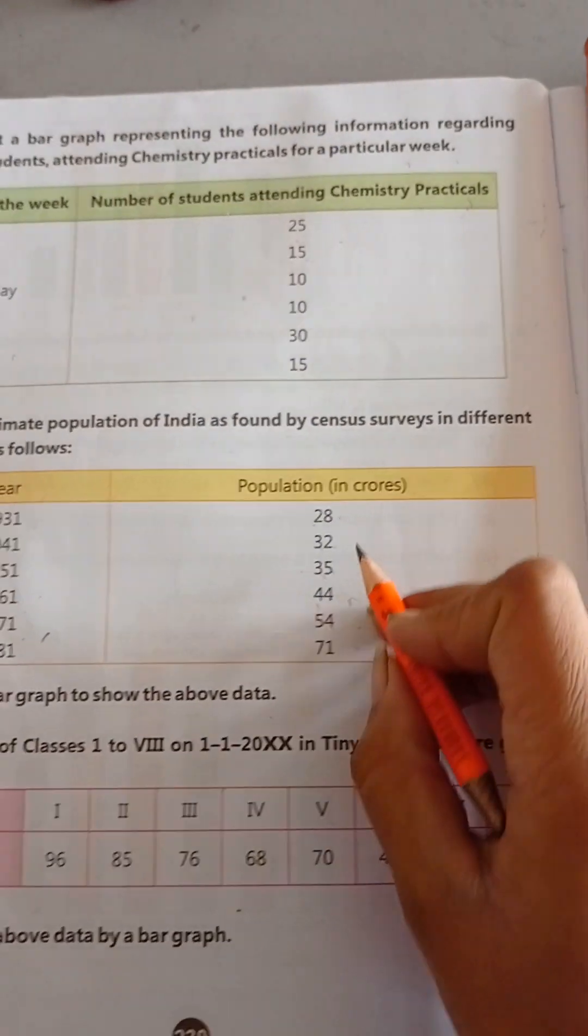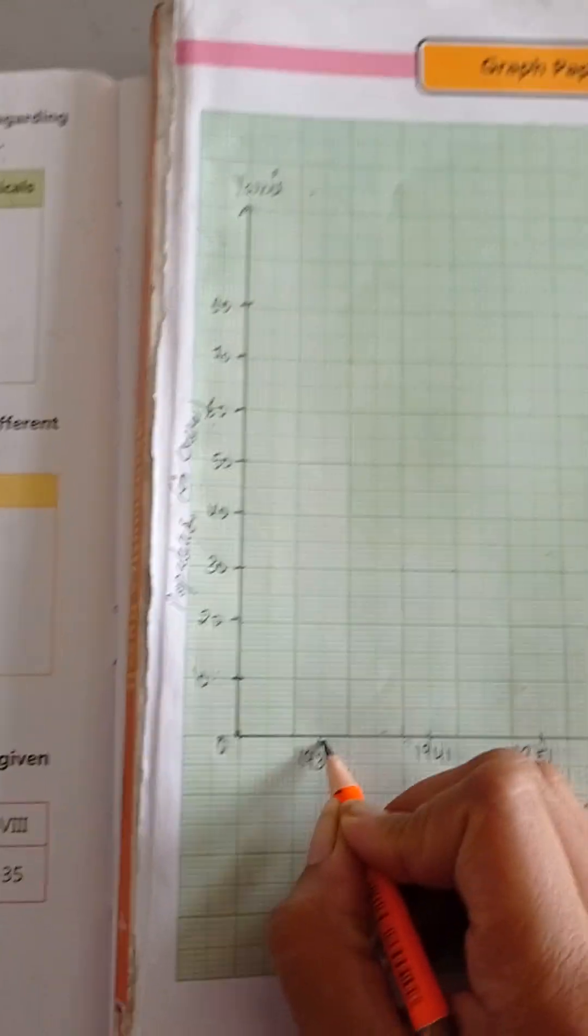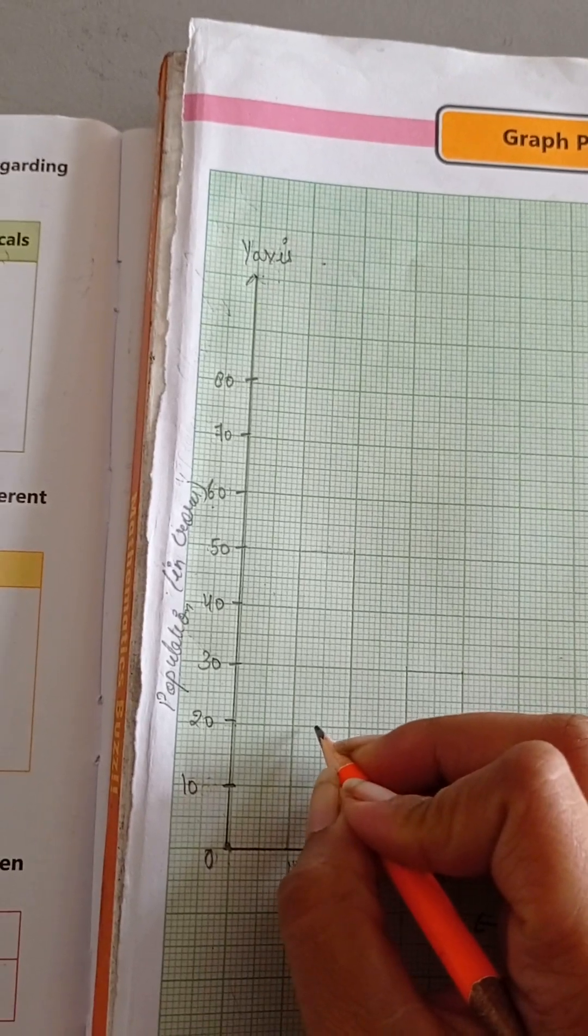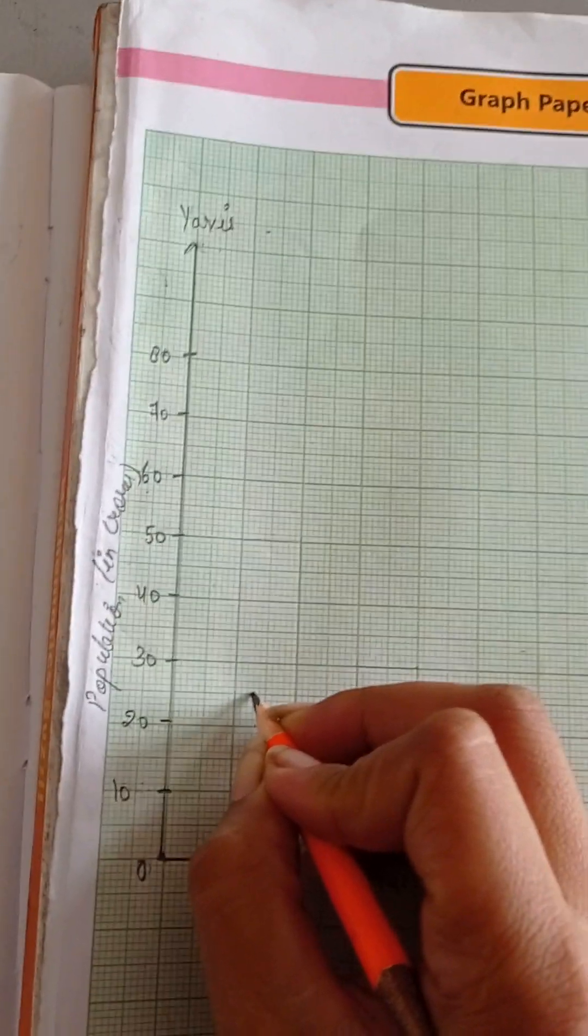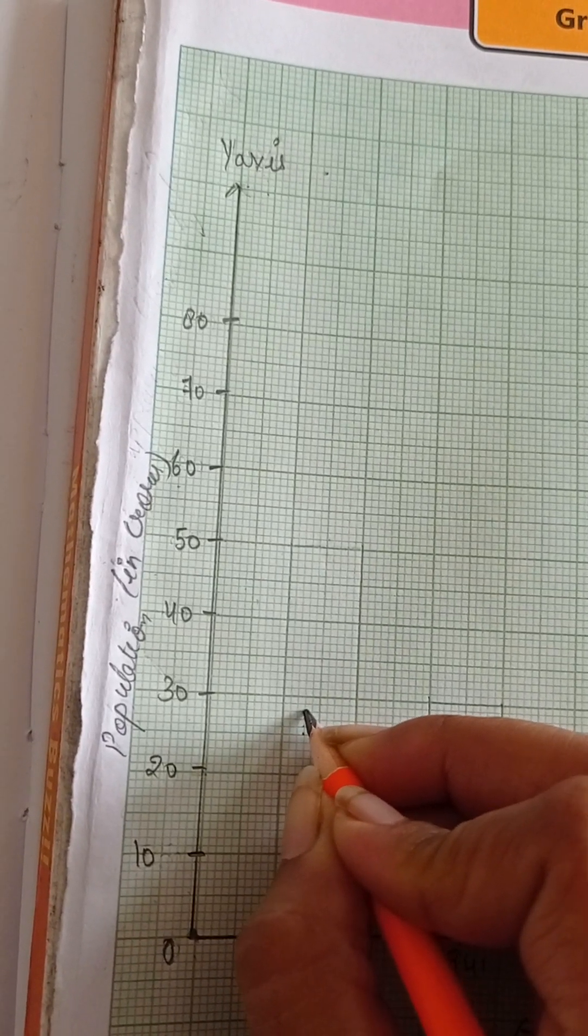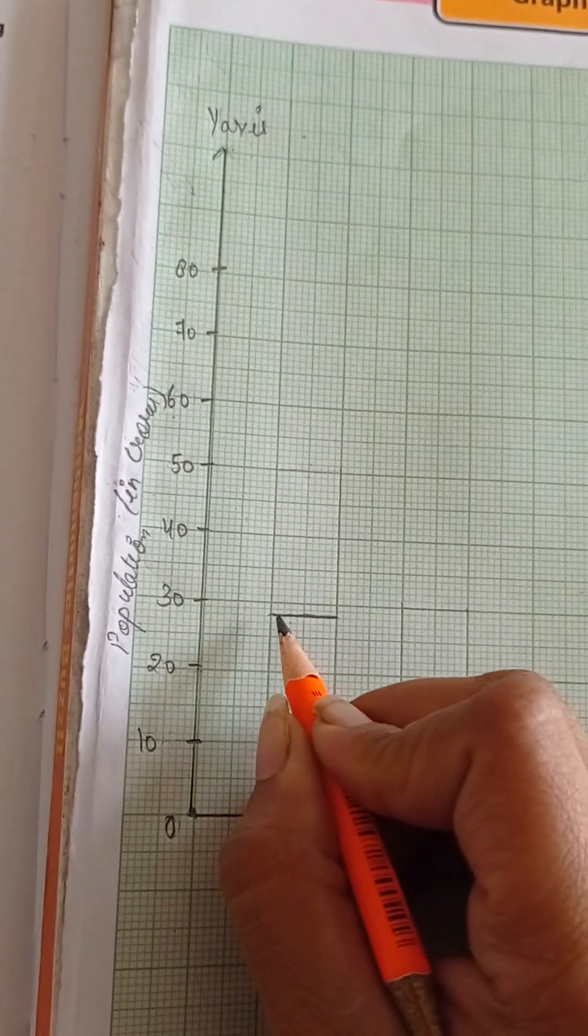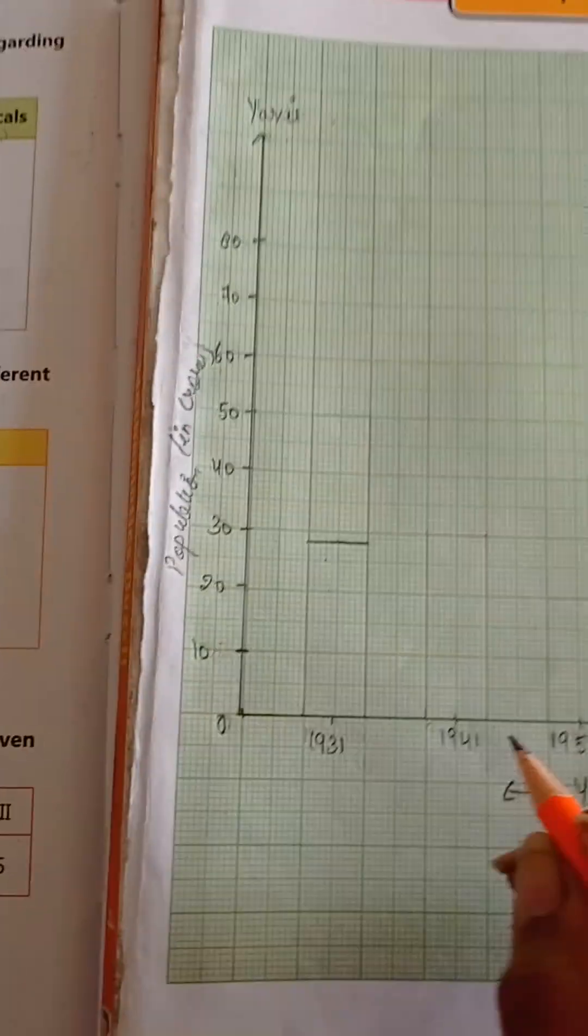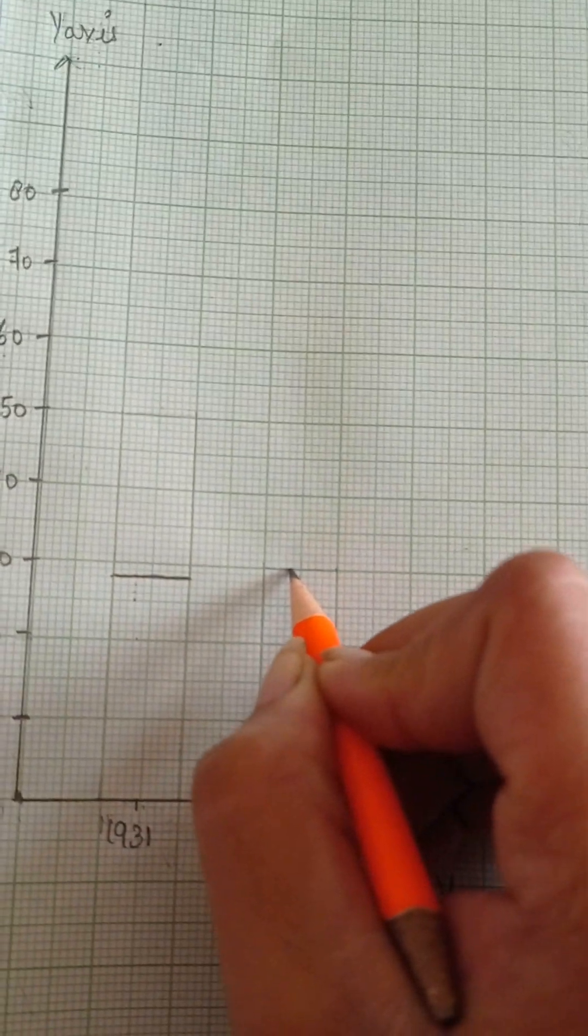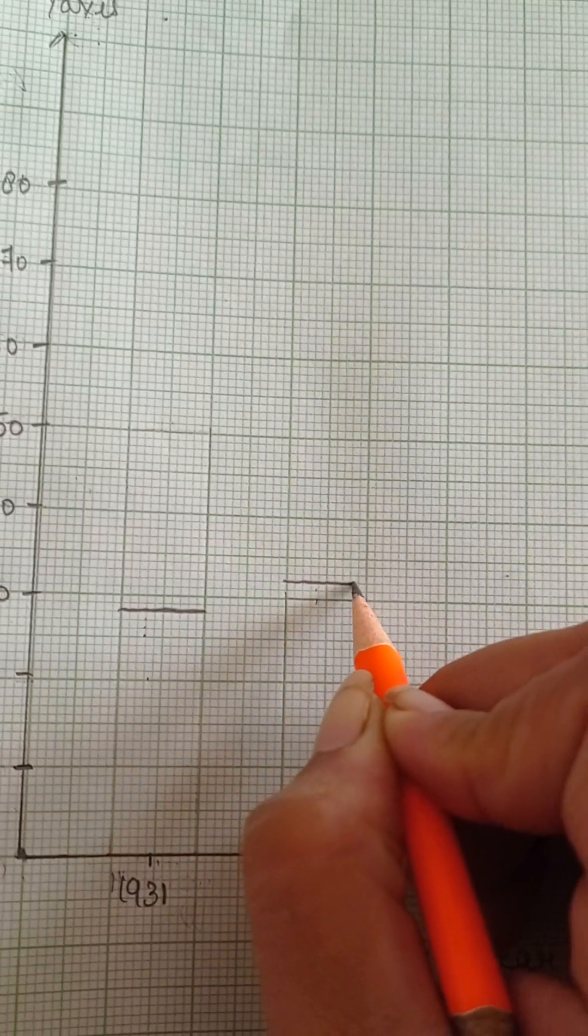Now, here it is. In 1931, 28. So mark 28 over here. Where is 28? Here it is 20, and this is 25. Count 26, 27 and 28. This is 28. Next one is 32 in 1941. Here it is 30, next point is 31, and next point is 32.